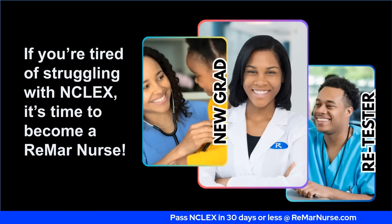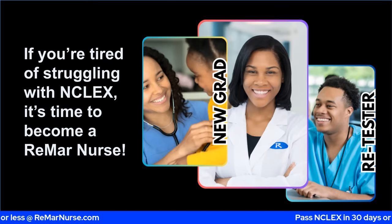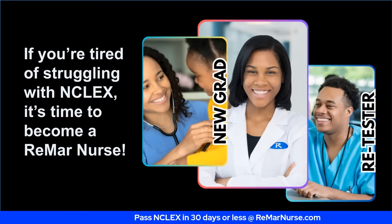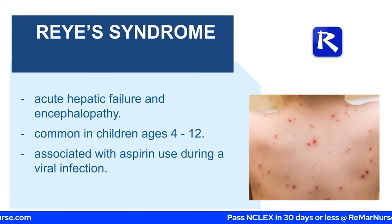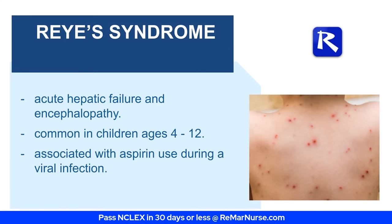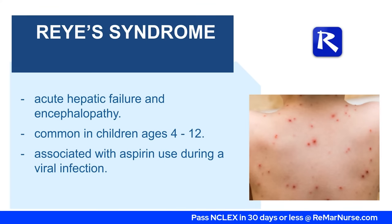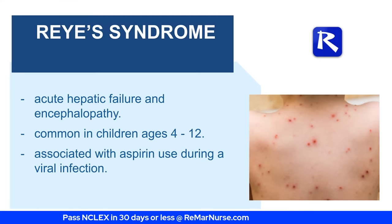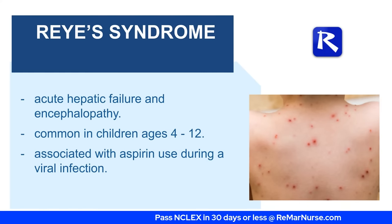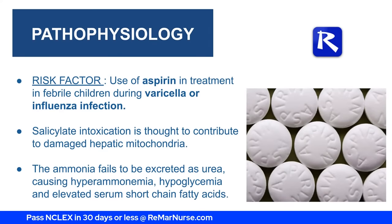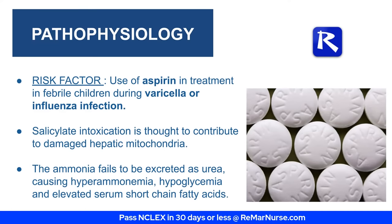As we just went over as a class, if you're tired of struggling for NCLEX, it's time to be a Remar nurse — this is a whole experience, not just studying for the test. Reye's syndrome is an acute hepatic failure — hepatic means liver — and encephalopathy, which means the brain is inflamed and affected. It commonly occurs in ages four to 12, and it is essentially the association of aspirin use with a viral infection. This is typically seen with aspirin therapy in children who have a fever during varicella or influenza.